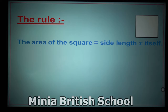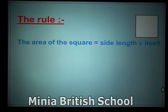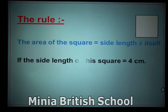If the side length equals 2, the area equals 2 times 2. If the side length of the square equals 3, the area equals 3 times 3 — the number times itself. So if the side length of this square equals 4 centimeters and I need to find the area...